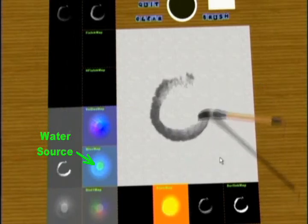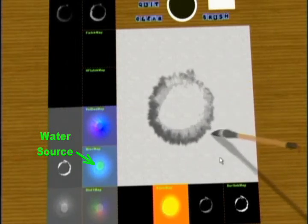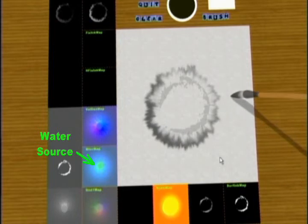We can also use boundary conditions to create special patterns. Here we have a circular shape that emits water in the middle of the paper.